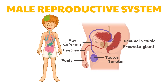Sperm production requires a slightly lower temperature than the human body. This is why the scrotum hangs loosely outside the body cavity. However, when the testis fails to descend, it leads to sterility because of the inhibiting effect of normal body temperature on sperm development.